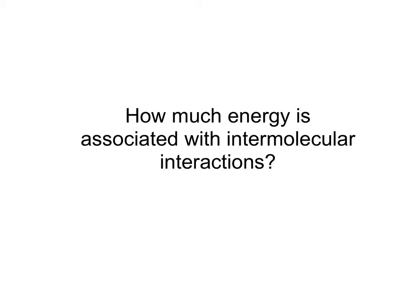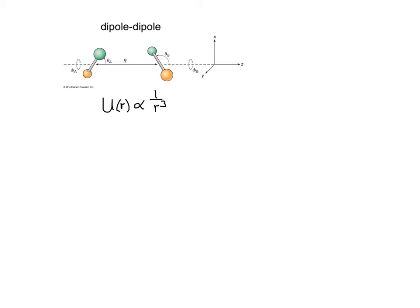So far, we've mostly been considering systems in which there are no interactions between particles. Let's look at how much energy is associated with intermolecular interactions. If we consider only neutral particles, one of the first forces that comes to mind is the dipole-dipole interaction force. This is when two molecules with a permanent dipole interact with one another, and this interaction energy is proportional to one over the distance between the molecules cubed. This interaction energy also depends on the angle between the dipoles. If we average over all angles, the average interaction energy is proportional to one over r to the sixth power.